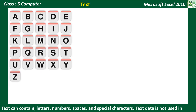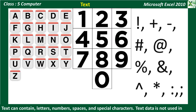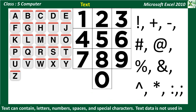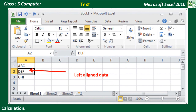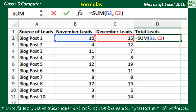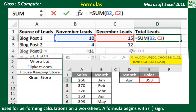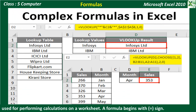Text: Text data can contain letters, numbers, spaces, and special characters. Text data is not used in calculations. By default, text data is left-aligned in the cell. Formulas: A formula is a mathematical equation involving numbers, values, operators, and cell addresses, used for performing calculations on the worksheet. Formulas can range from basic mathematical operations to complex calculations.